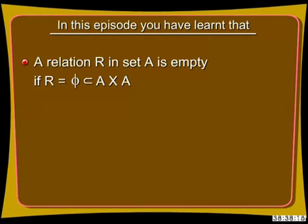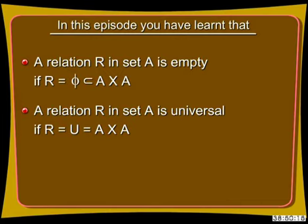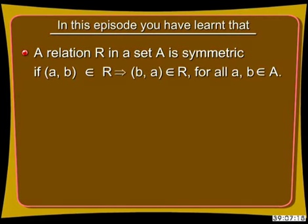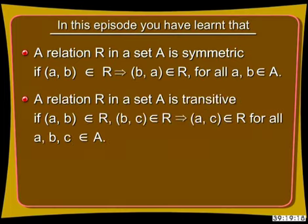In this episode you have learned: A relation R in set A is said to be empty if no element of set A is related to any element of it. A relation R in set A is said to be universal if each element of set A is related to every element of set A. A relation R in set A is reflexive if every element of set A is related to itself. A relation R in set A is symmetric if A is related to B implies that B is related to A, for all A and B belonging to set A. A relation R in set A is transitive if A is related to B and B is related to C implies that A is related to C, for all A, B and C belonging to set A.